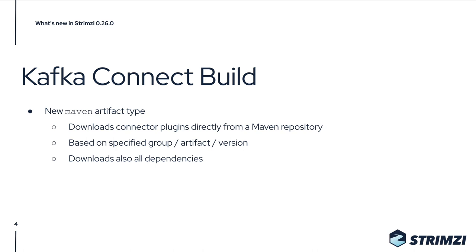Another feature we worked on is a new artifact type for the Kafka Connect build: the Maven type artifact. It lets you download connector plugins directly from Maven repositories. You simply specify the group ID, artifact ID, and version of the jar in the Maven repository, and Strimzi takes care of downloading the connector and all its dependencies directly from Maven. This is really simple to use, especially if a connector doesn't distribute zip or tar.gz files.